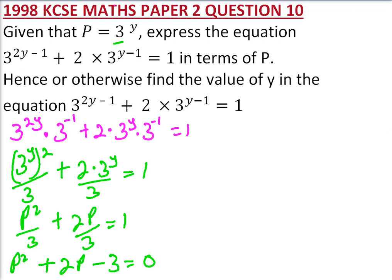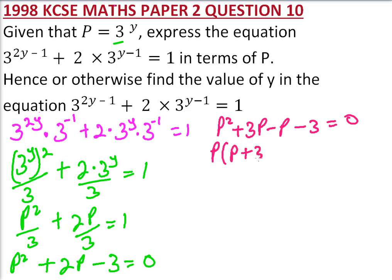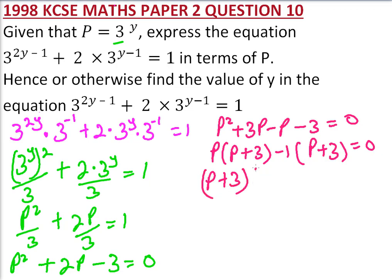This is a quadratic equation. We factor it and say this is P squared plus 3P minus P minus 3 equals 0. Factor out P to get P times (P plus 3), then factor out minus 1 to get minus 1 times (P plus 3), which gives (P plus 3)(P minus 1) equals 0.